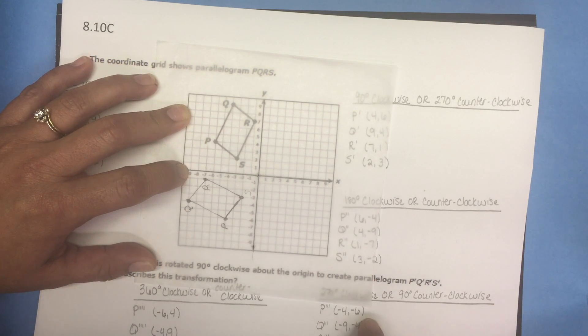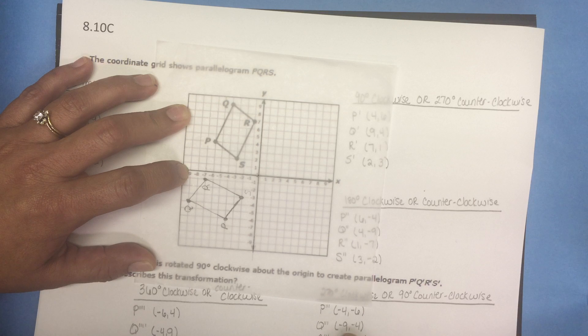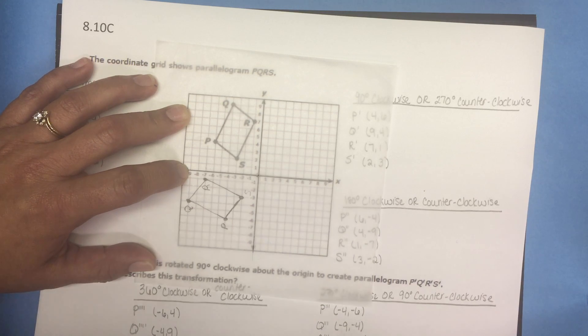P would now be (-4, -6), Q (-9, -4), R (-7, -1), and S (-2, -3).